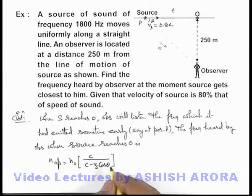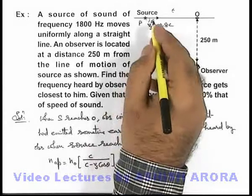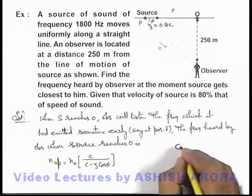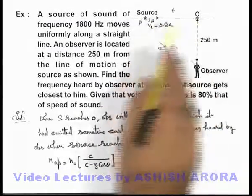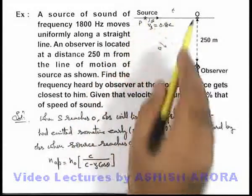n_0... and in this situation the value of cos theta we can calculate very easily. Here cos theta is equal to PO upon P observer.